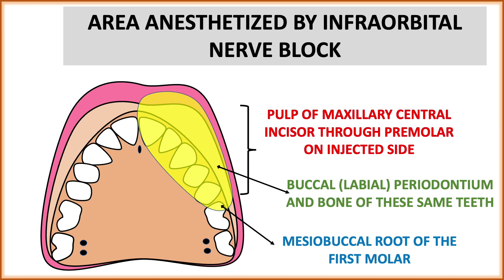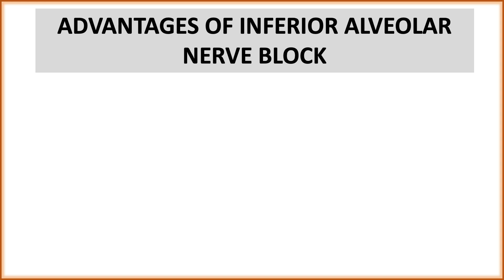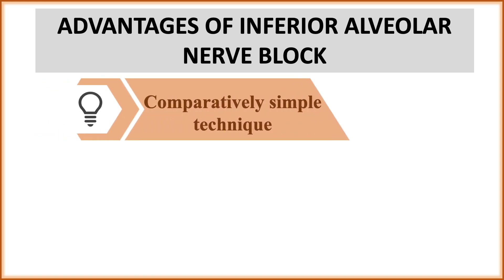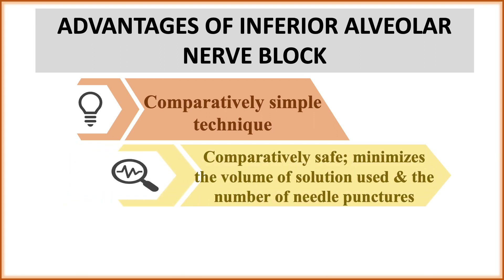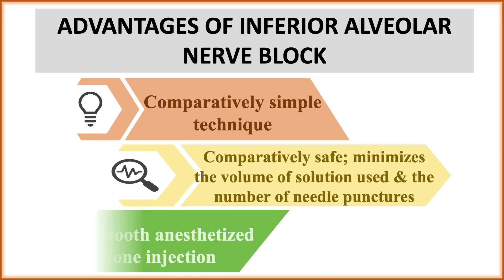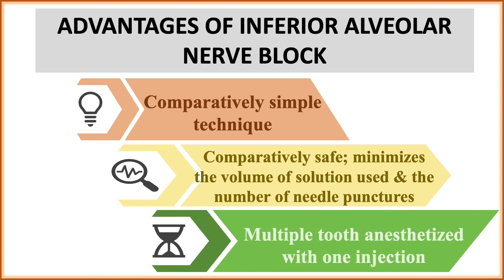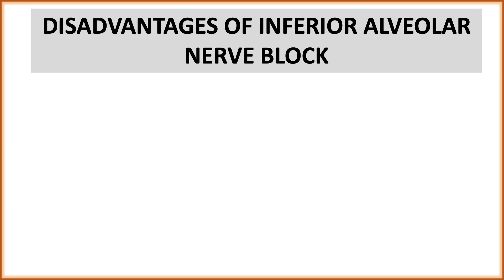Advantages of the infraorbital nerve block: it is a comparatively simple and safe technique. It minimizes the volume of solution used and the number of needle punctures. Multiple teeth can be anesthetized with a single injection, whereas with local infiltration, multiple punctures are needed and anesthetic solution must be injected for each individual tooth.